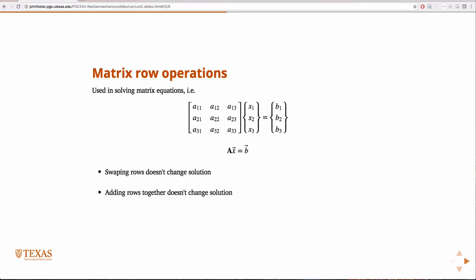Adding rows together doesn't change the solution. We know we can do that in a system of equations. Sometimes it's useful to just add one equation to the next because it automatically eliminates one of the variables. And that's some of the tools you've been using since algebra. So, adding rows together doesn't change the solution and multiplying rows by a scalar doesn't change the solution. You know, any equation, if x is equal to y, then 5x is equal to 5y. Doesn't change the solution. So, really by combining these three simple rules, we can solve any system of equations.